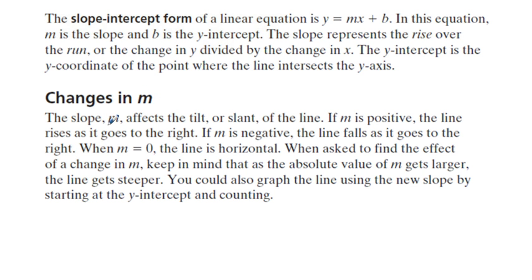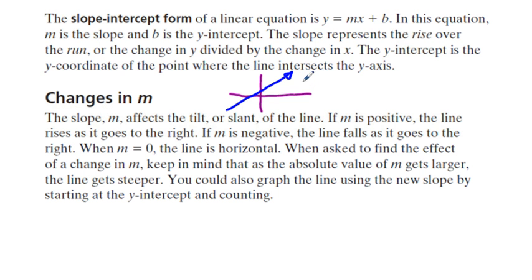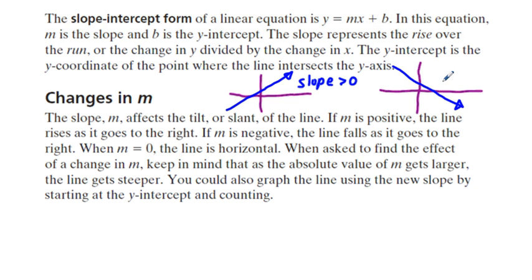Changes in m: the slope affects the tilt or slant of the line. If m is positive, the slope rises as it goes from left to right — if you sketch that on an xy coordinate plane, the function is going up, giving a slope greater than zero. If the function's value is declining as we go from left to right, we have a slope less than zero.